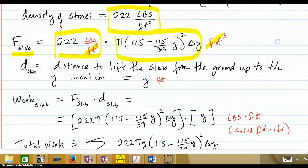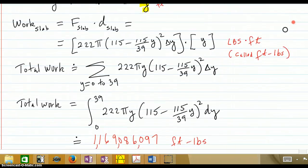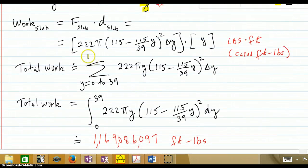So that's how much it weighs. And then how far are you going to lift it? You're going to lift it from the ground up to the Y location. So that's why. So the whole work on the slab to move it into the location is the force, which is the weight, which was obtained by the density times the volume, times the distance you're going to lift it. And that all works out to be pounds times feet. It was the force times the distance, pounds times feet. But we call that foot-pounds.